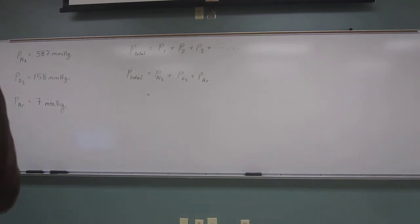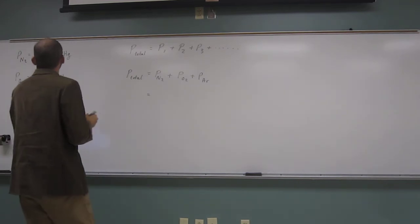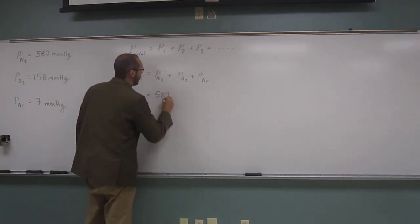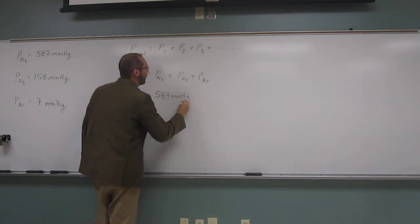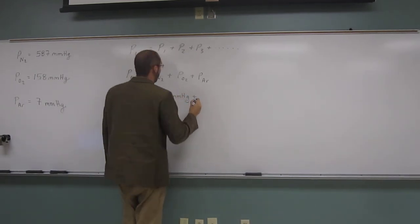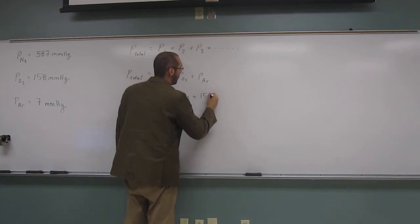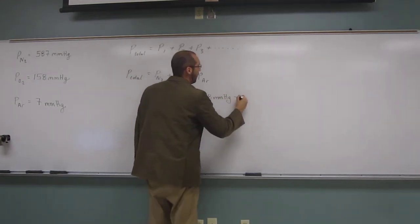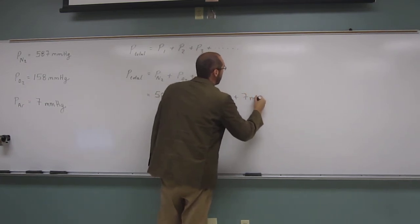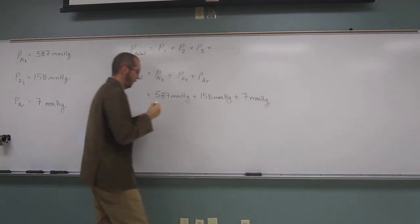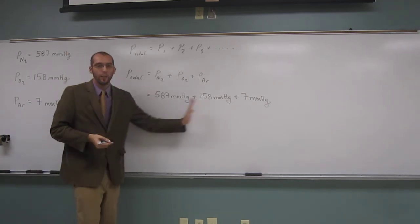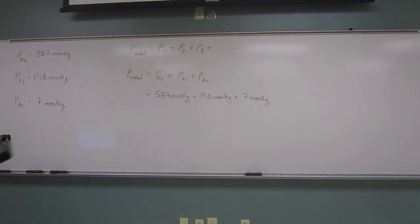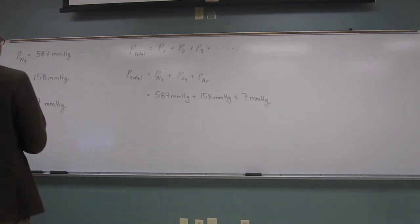So we can leave them in millimeters of mercury, which is what I'm going to do. So 587 millimeters of mercury plus 158 millimeters of mercury plus 7 millimeters of mercury. We're adding those three things up, and our units are going to be millimeters of mercury.